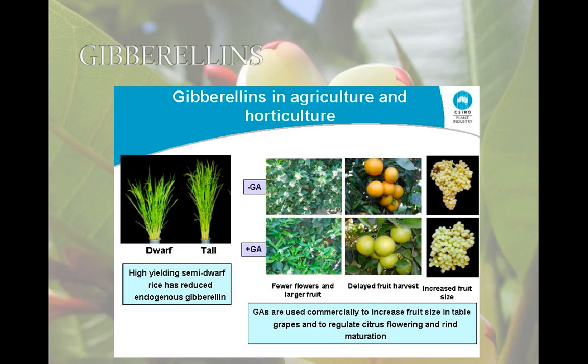Gibberellins are growth regulators. There are over 100 different kinds. They're produced in the roots and in young leaves. They stimulate cell elongation and cell division in the stems, so they enhance auxin. They're also important in seed germination.